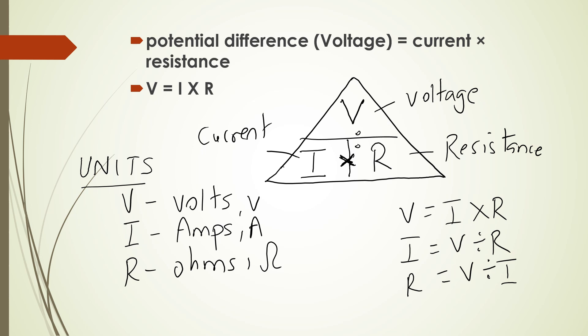You put it in a triangle to rearrange it. Current will be voltage divided by resistance, and resistance will be voltage divided by current. When you're multiplying or dividing, you also do that with the units as well.